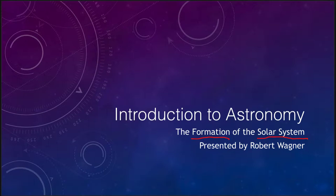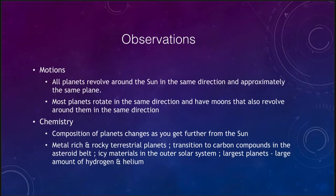We want to start out looking at what some of the observations are that can help us to understand our solar system. We can look at a couple of different things: we can look at the motions and we can look at the chemistry of the solar system. These are both important for being able to understand how our solar system formed in the first place.